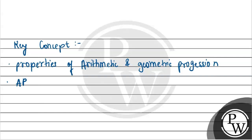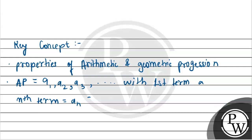For arithmetic progression AP, given a sequence a1, a2, a3, and so on with first term A and common difference D, the nth term is an = A + (n−1)D. The sum of the first N terms of an AP is S = N/2 · [2A + (N−1)D].